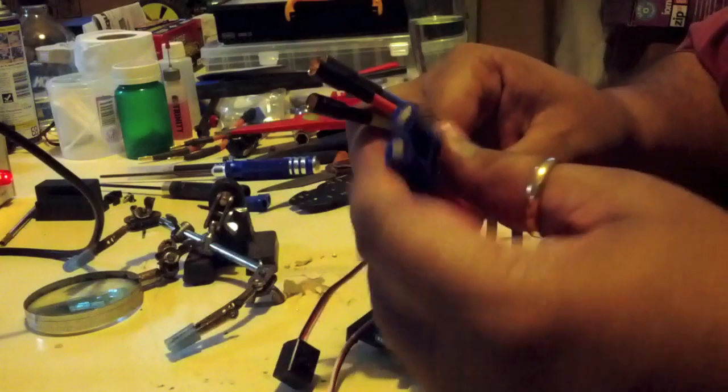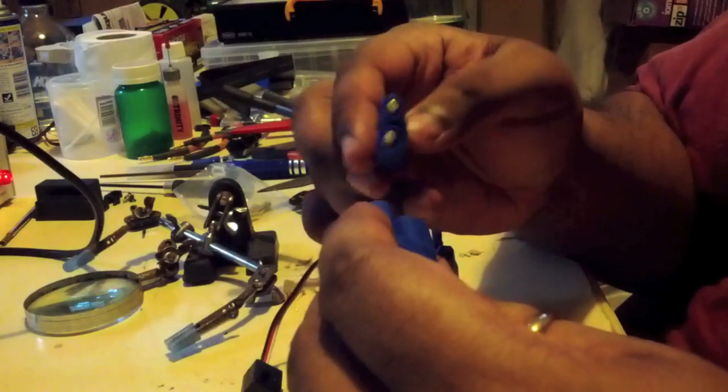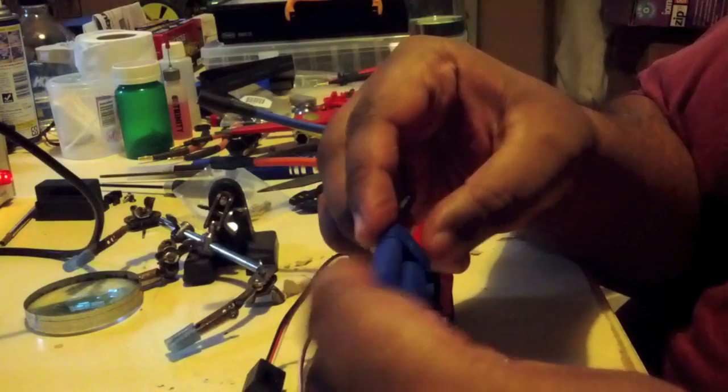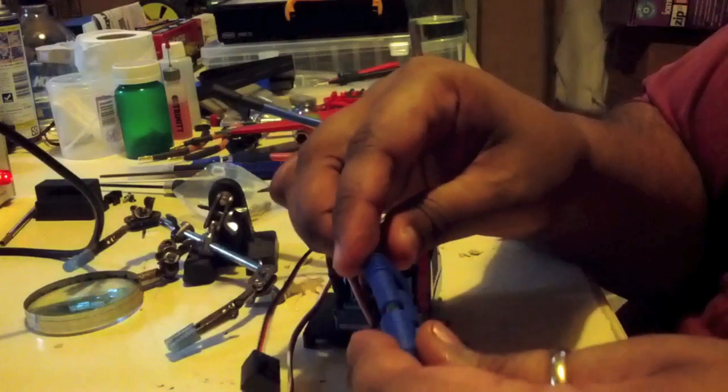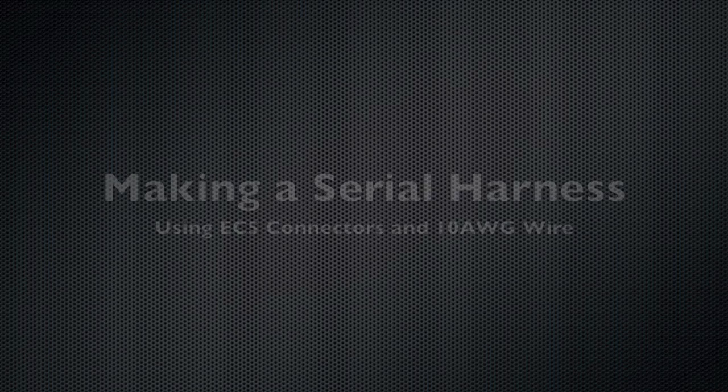We've got the EC5 connector and the 6.5mm socket. I'm just showing how the male end is on the ESC and I'm just mating it with a female housing. The female socket should always go on the battery side.